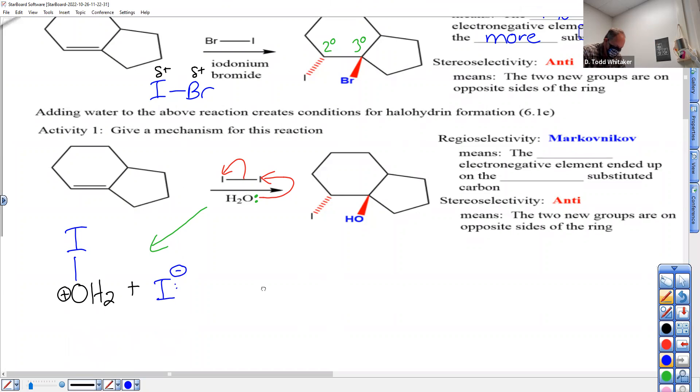It still has two H's and it has a plus. It's an oxonium, and the other species is iodide.